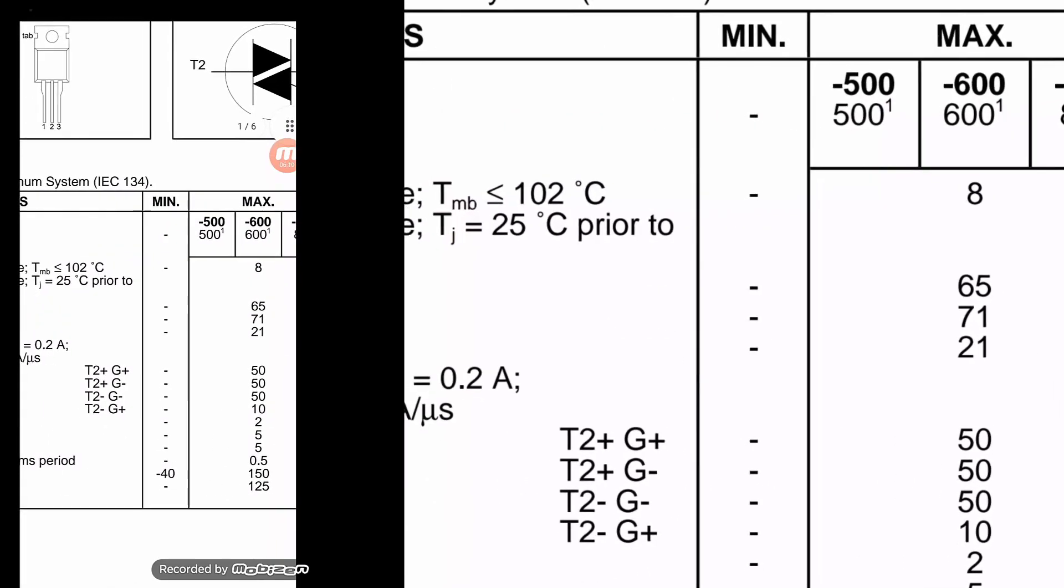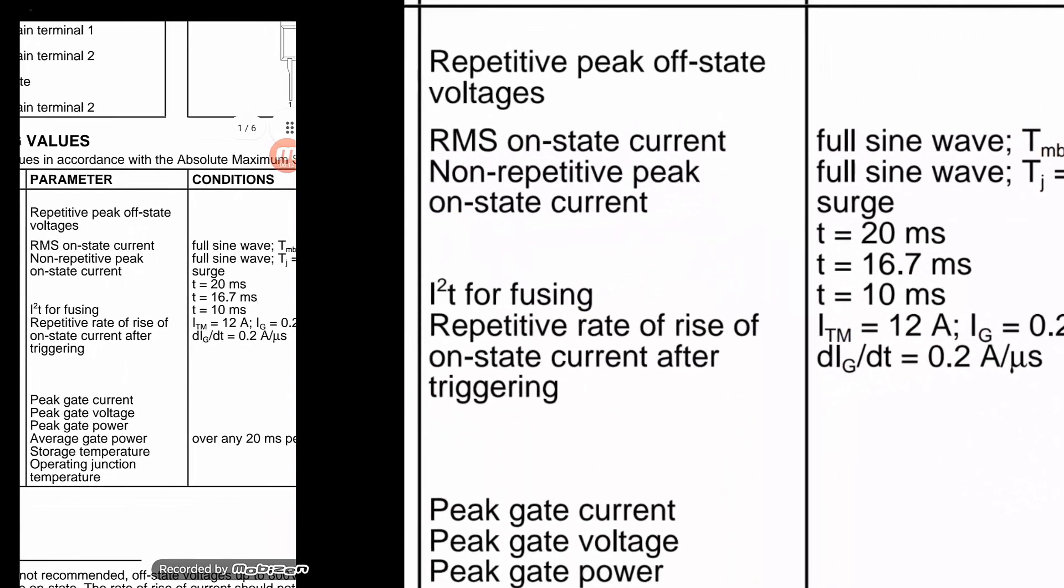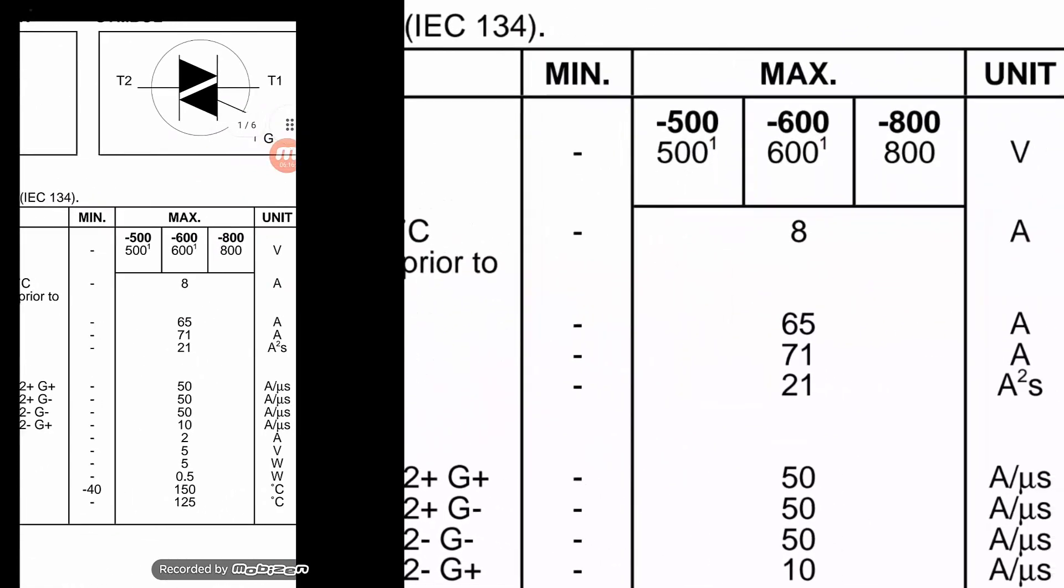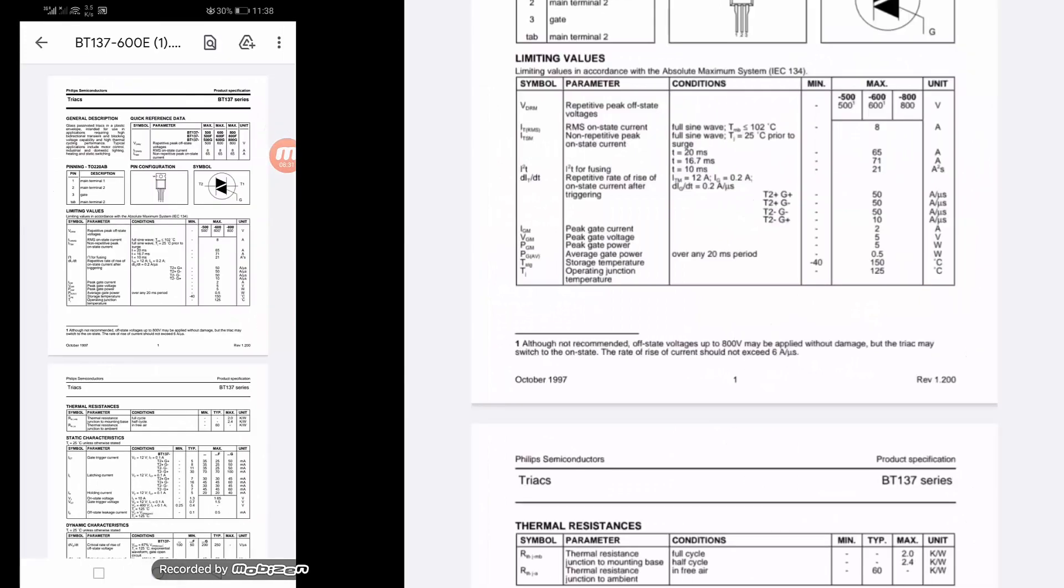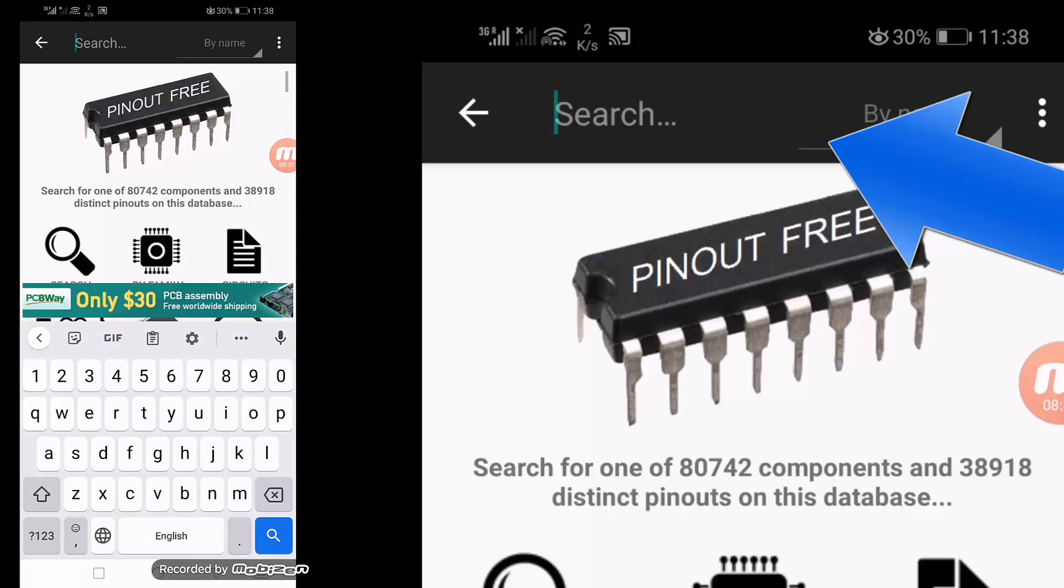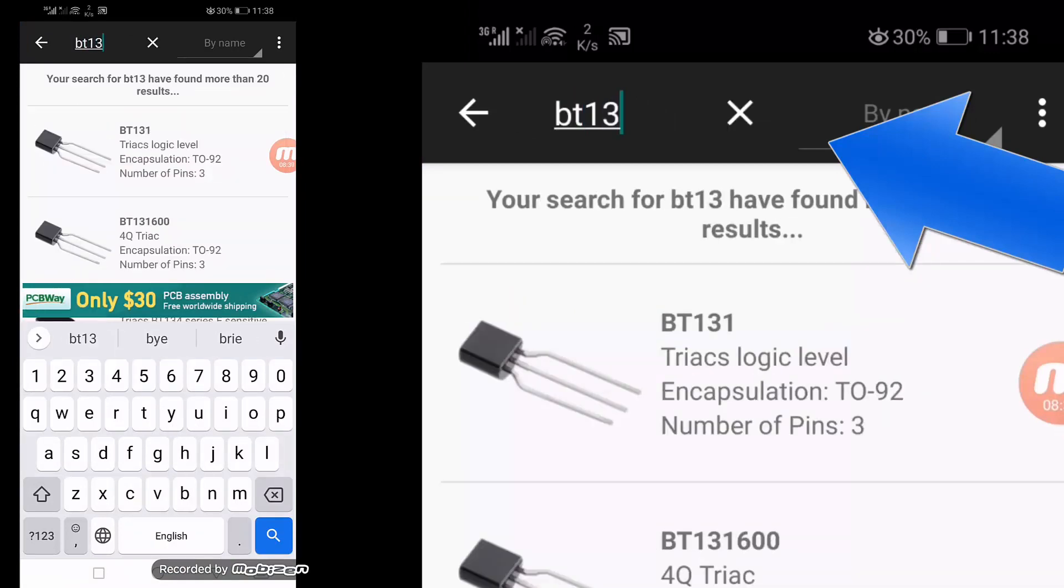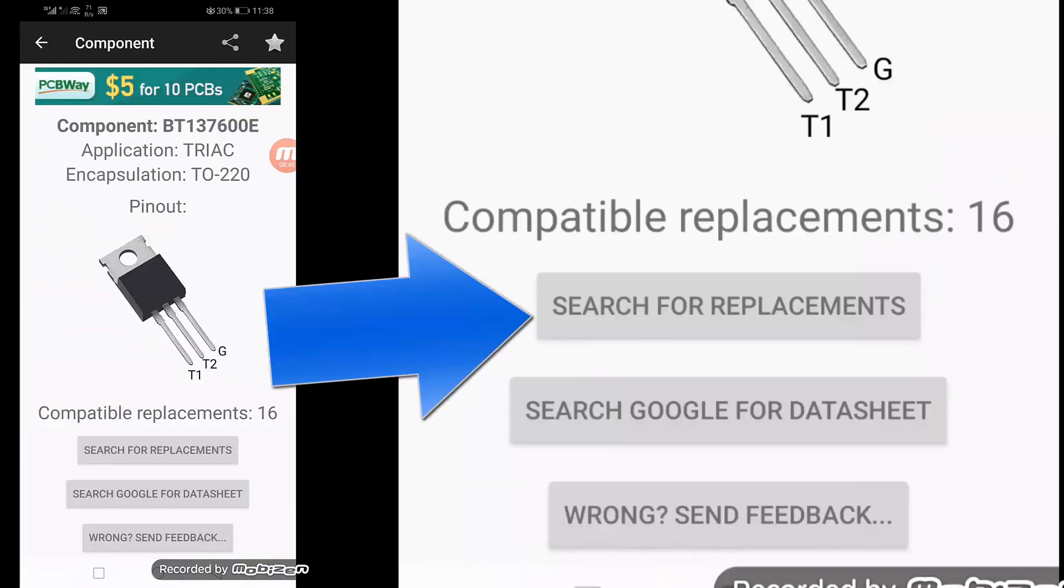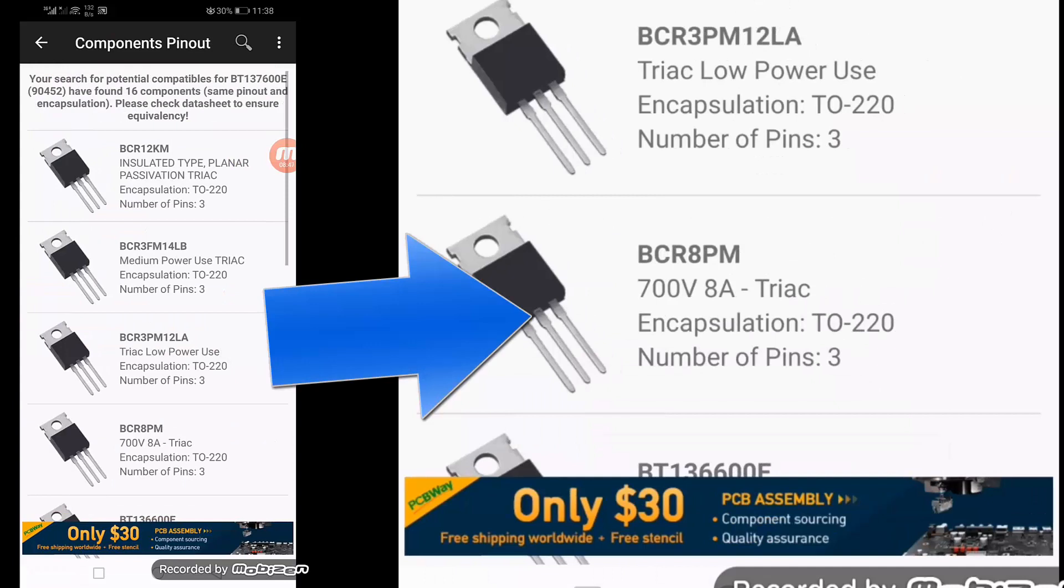It is on-state current when it is conducting. So it can pass the surges for 20 millisecond at 65 ampere. Now we can go back to the same application for equivalent.